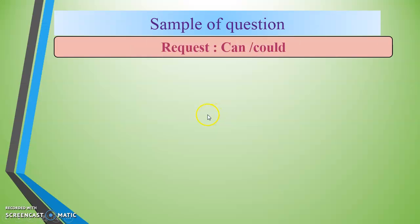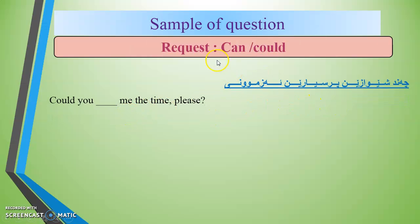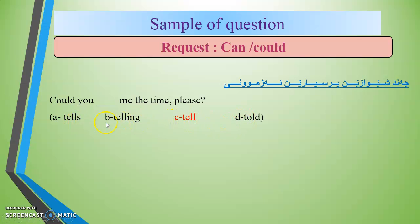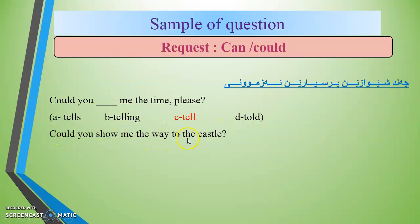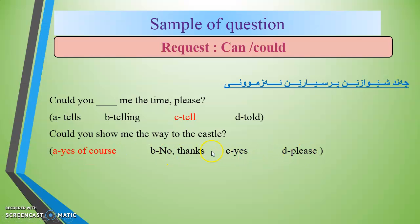For example: 'Could you tell me the time, please?' Here 'me' is the indirect object and 'the time' is the direct object. Another example: 'Can you show me the way to the castle?' — 'me' is indirect, 'the way to the castle' is direct.